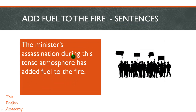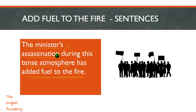Ek aur example sentence hai: 'The minister's assassination during this tense atmosphere has added fuel to the fire.' Aap kehna chahte hain ki pehle se hi tension ka mahal tha, aur us ke saath kya ho gaya? Minister ki assassination ho gayi, uska khun ho gaya. Aur us wajah se atmosphere ki jo tension hai, woh badh gayi. To ek musibat thi jo aur ziadha badh gayi, aur isi liye, minister ki assassination has added fuel to the fire.